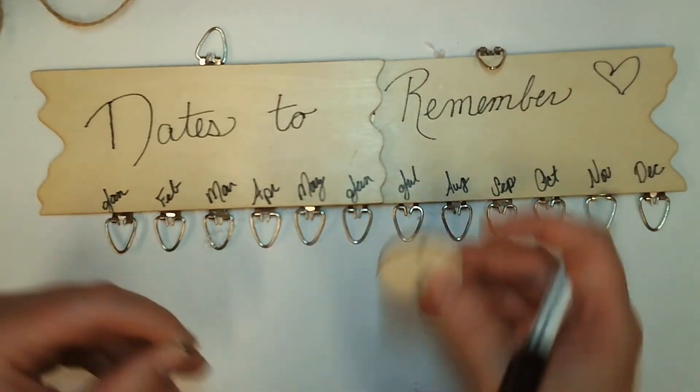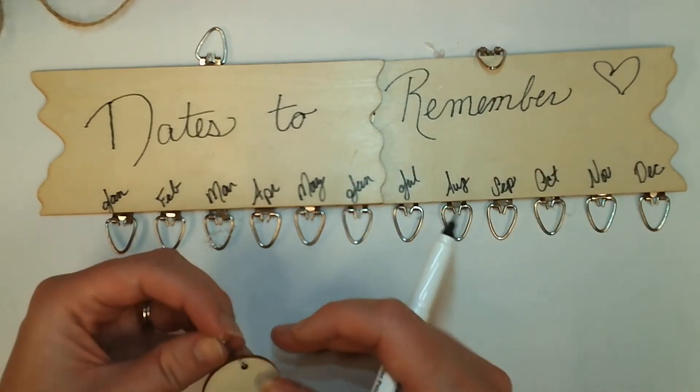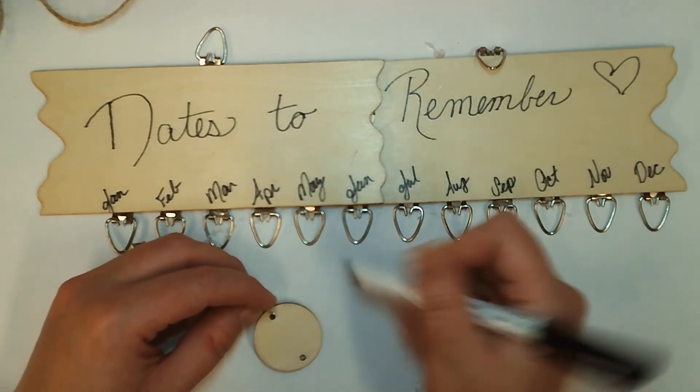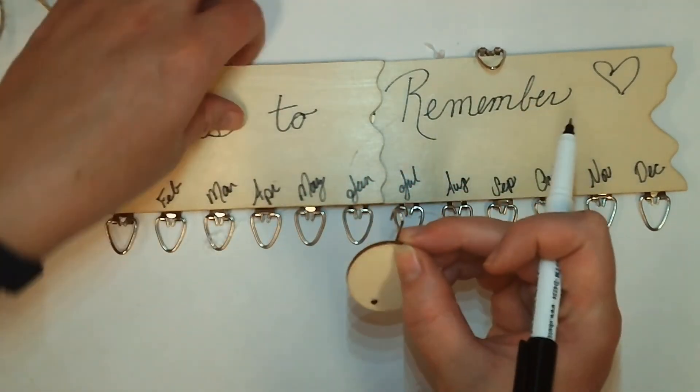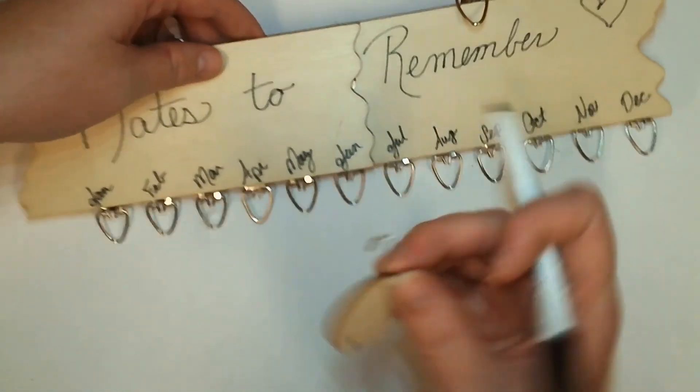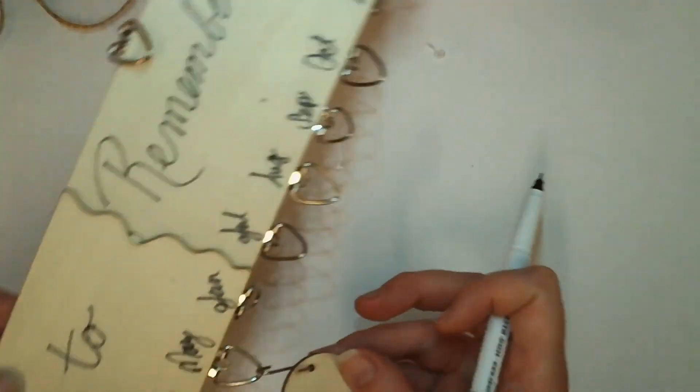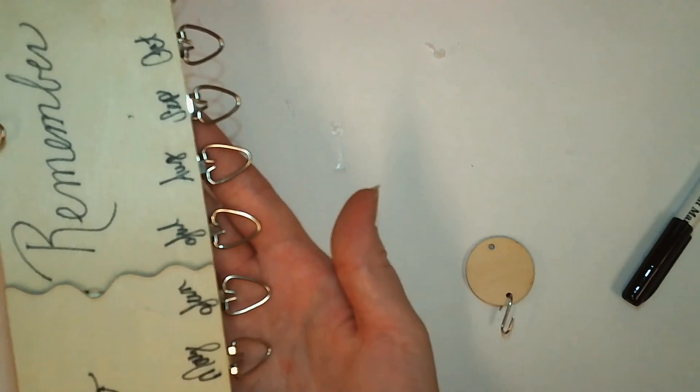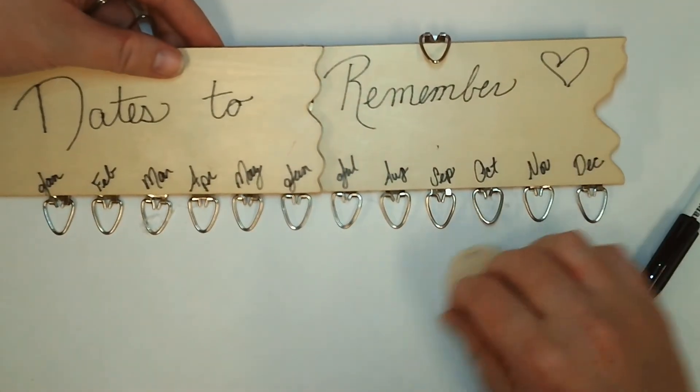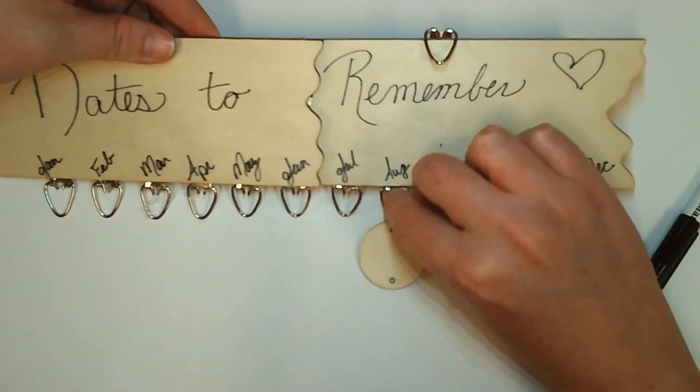What you'll do next is on each of your little round circles, you're going to go ahead and write whatever important date happens in each of those months. Attach it to your little S-hook and hook it right onto your item. You can use as many for each month as you'd like for how many you have or you can always add more if you get more at the store.